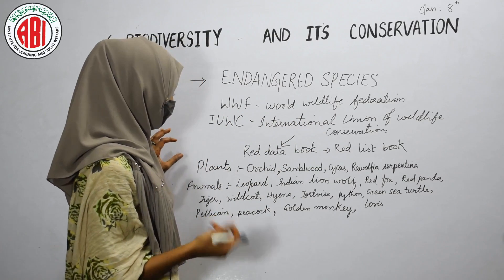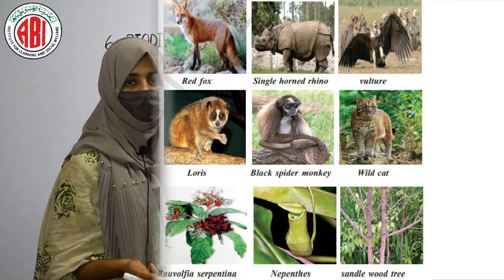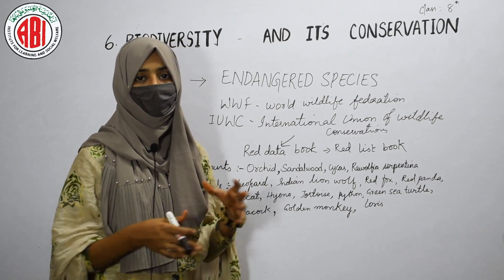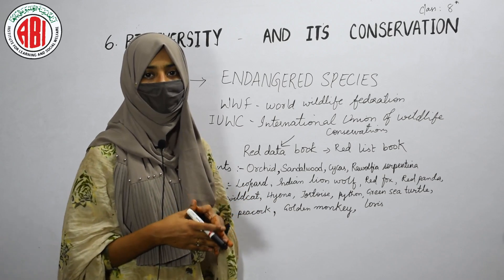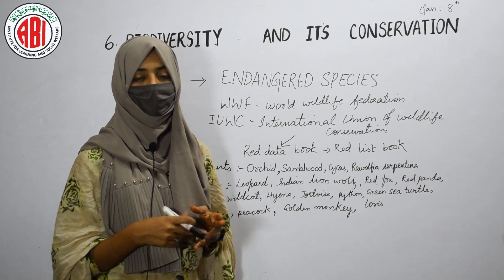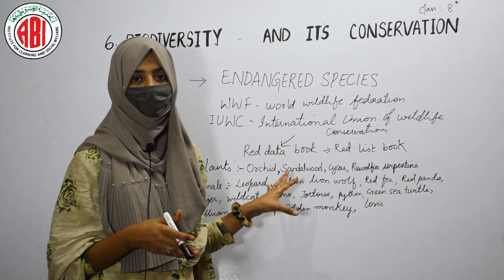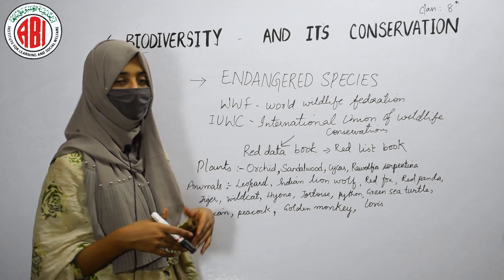The endangered animals in India include leopard, Indian lion, wolf, red fox, red panda, tiger, wildcat, hyena, tortoise, python, green sea turtle, pelican, peacock, golden monkey, and loris. These animals need to be taken care of. If we do not disturb the ecosystem, these species will not become extinct — they will reproduce and survive in nature. If the ecosystem is kept undisturbed, we can protect biodiversity.